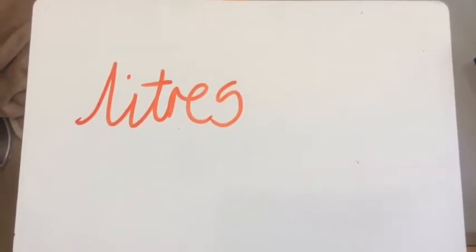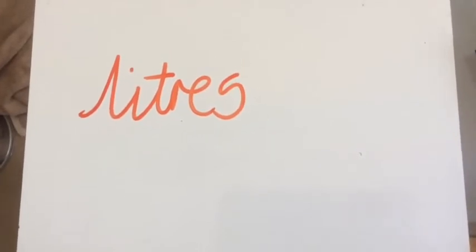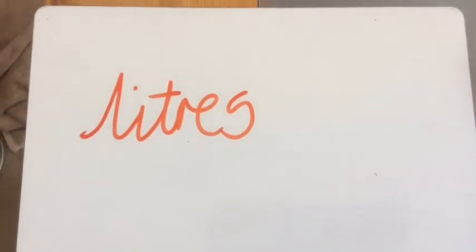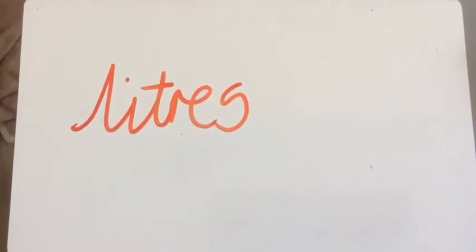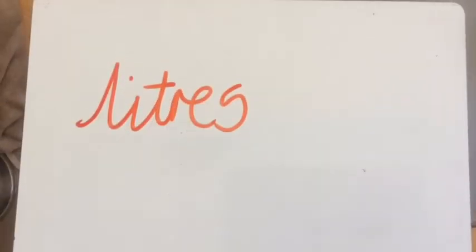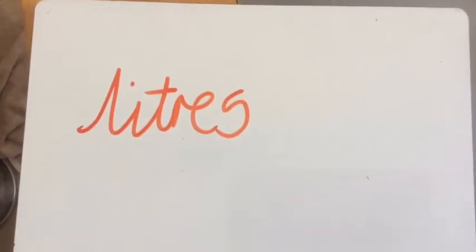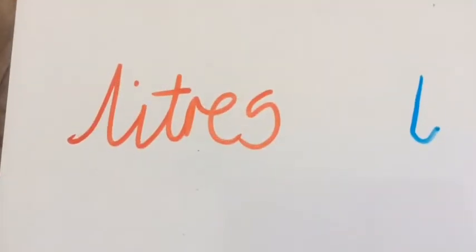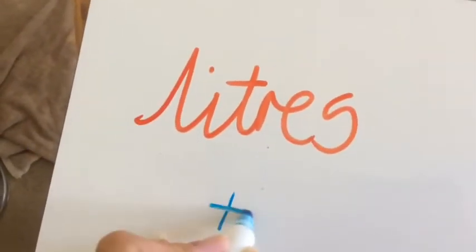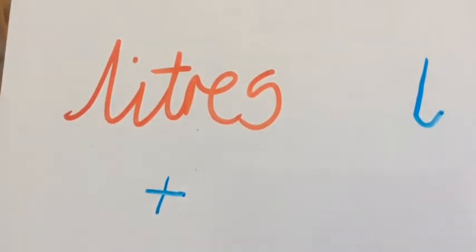Now around the world we don't really measure in yoghurt pot fulls of water. We measure capacity in something called litres. Have a look at a measuring jug in your house or a bottle that holds one litre. You probably won't find the word litre on your bottle, it will have an L. It's just like we don't write the word plus or add, we shorten it to a symbol. So we shorten our litres to L.